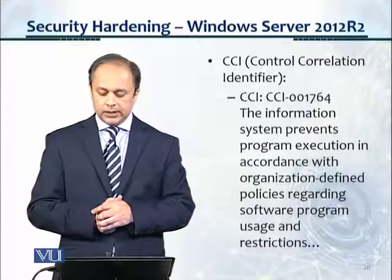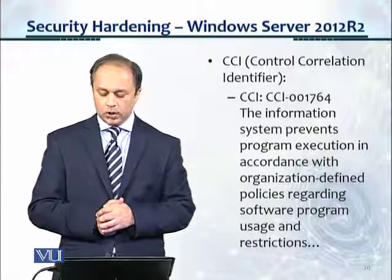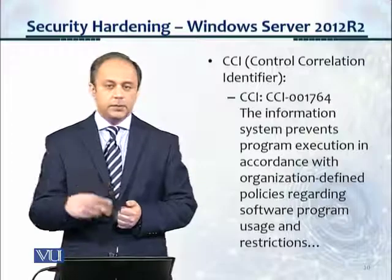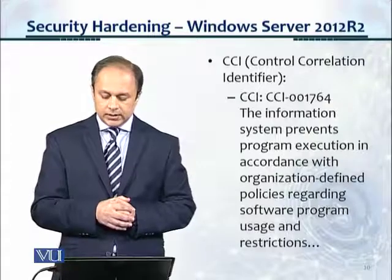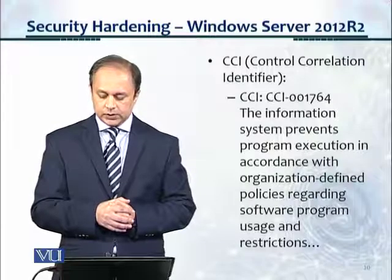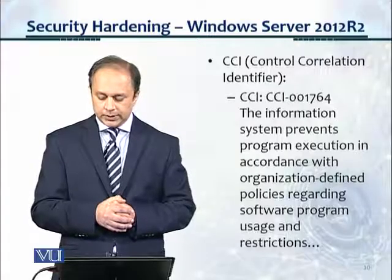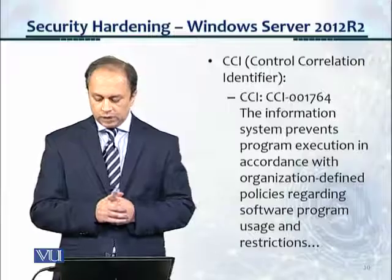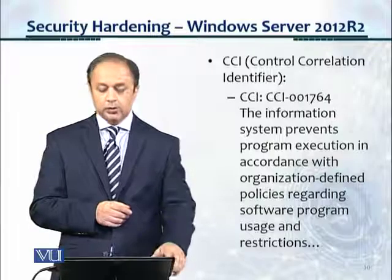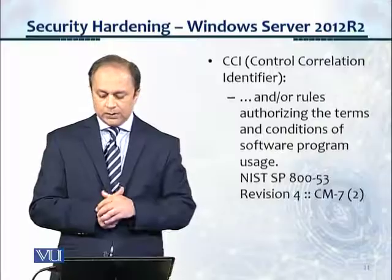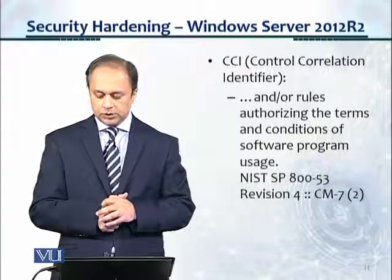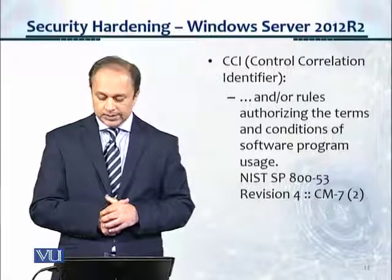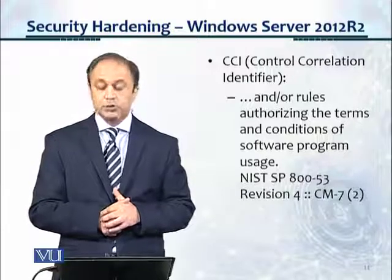Here's the CCI — Control Correlation Identifier — cross-reference number: CCI-001764. It states: the information system prevents program execution in accordance with organization-defined policies regarding software program usage and restrictions, and/or rules authorizing the terms and conditions of software program usage. It also gives a reference to NIST SP 800-53 Revision 4.